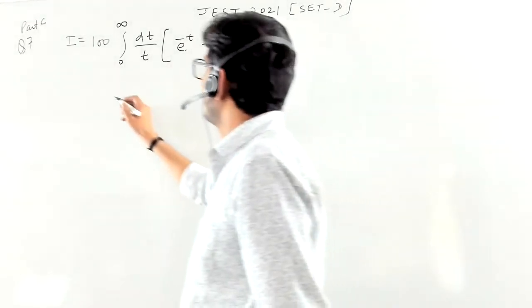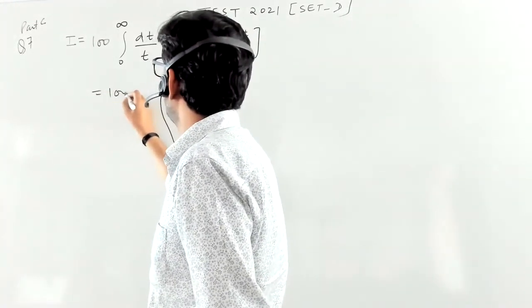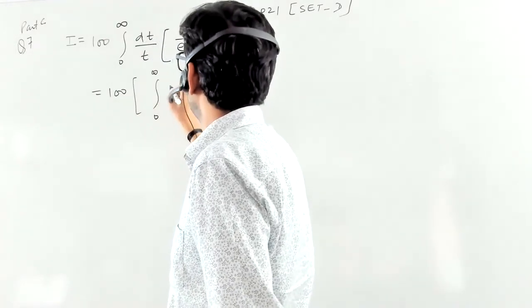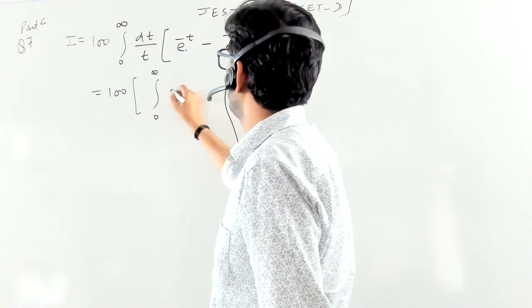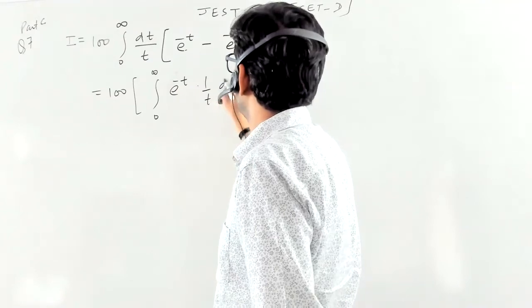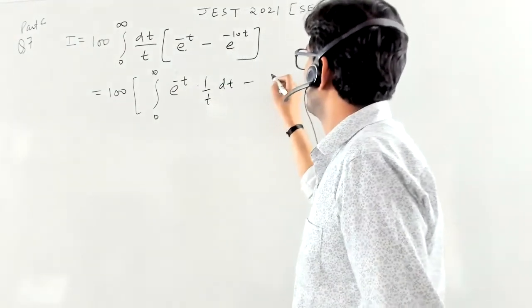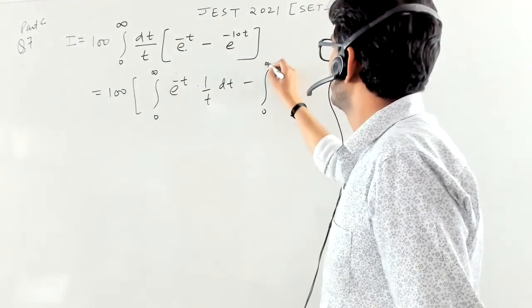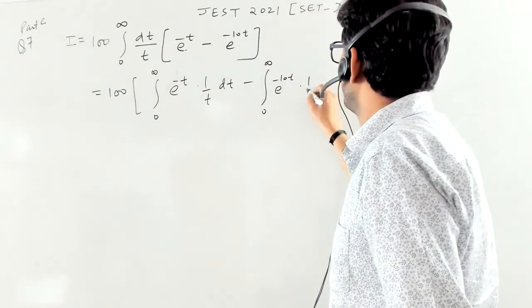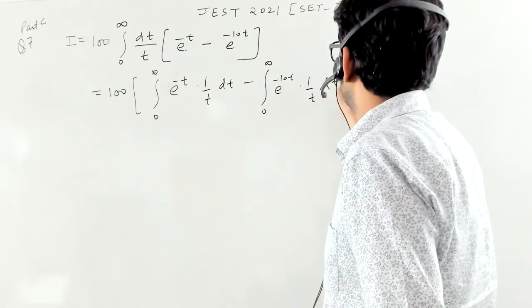So this is actually 100 times integral zero to infinity e to the power minus t, 1 by t dt, minus integral zero to infinity e to the power minus 10t, 1 by t dt, right?